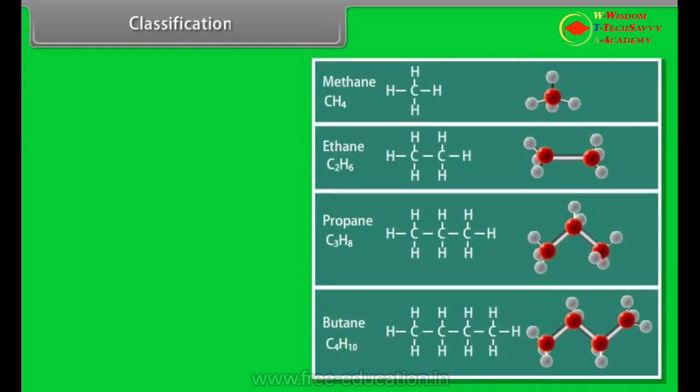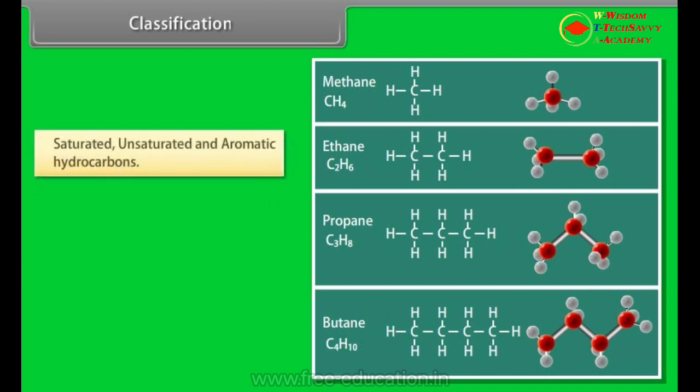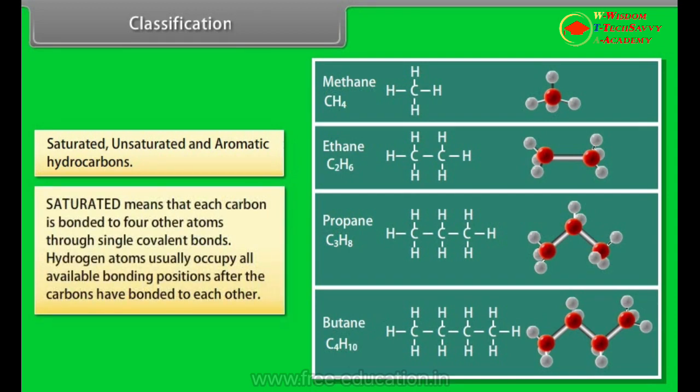Classification. Depending upon the types of carbon-carbon bonds present, hydrocarbons can be classified into three main categories: saturated, unsaturated, and aromatic hydrocarbons. Saturated means that each carbon is bonded to four other atoms through single covalent bonds. Hydrogen atoms usually occupy all available bonding positions after the carbons having bonded to each other.